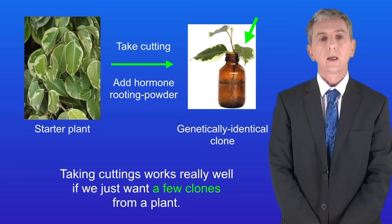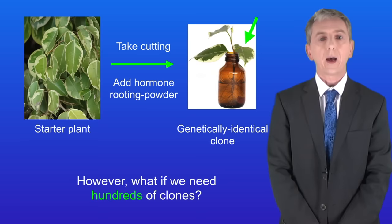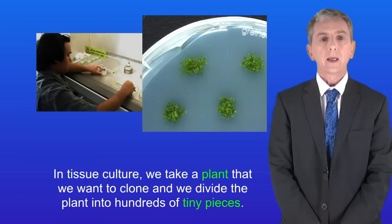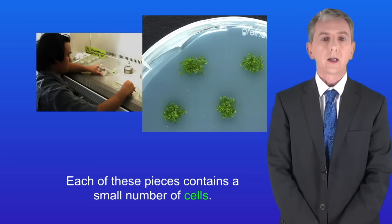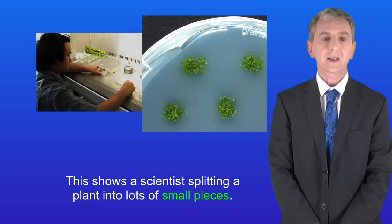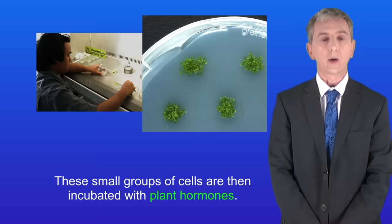Taking cuttings works really well if we just want a few clones from a plant. However, if we need hundreds of clones, we use tissue culture. In tissue culture we take a plant that we want to clone and divide it into hundreds of tiny pieces, each containing a small number of cells. These small groups of cells are then incubated with plant hormones, which stimulate the plants to grow and develop into fully grown clones.